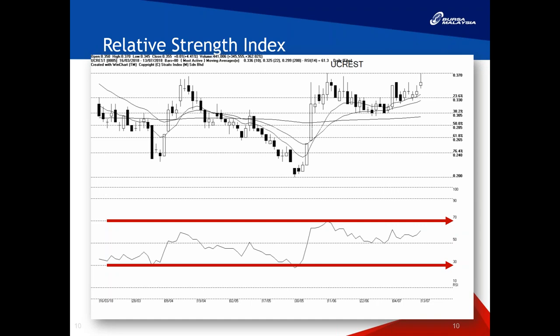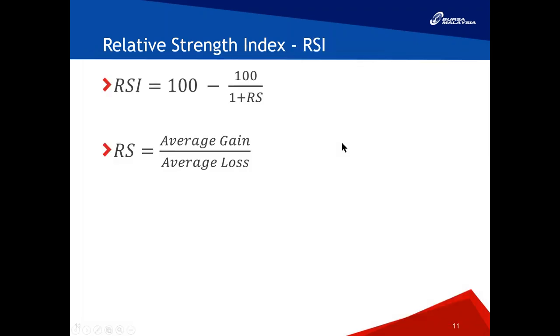The most important thing is that you understand when something turns from overbought — meaning the uptrend ends — and then you can start thinking about selling. These two levels, 70% and 30%, are the important ones to keep in mind.